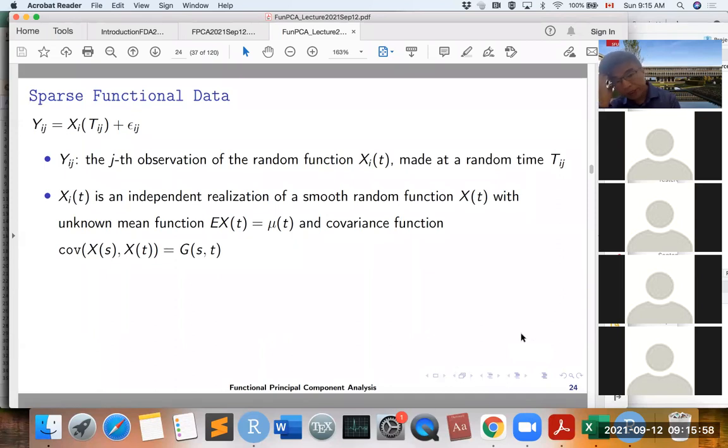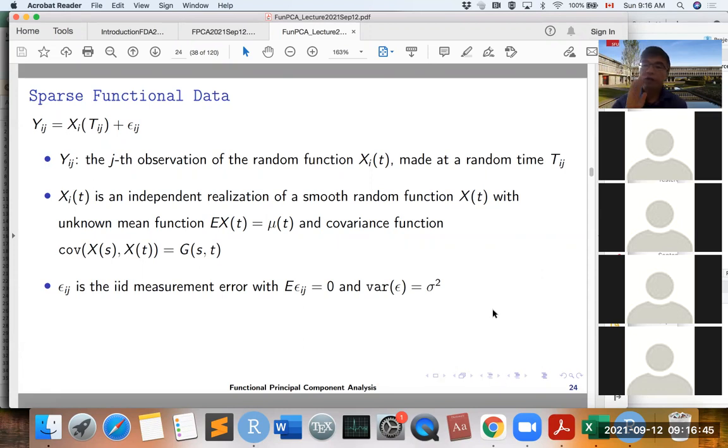Basically, we assume that the curve X_IT is an independent realization of our smooth random function XT, with the unknown mean function E(XT) equal to μ(T), and the covariance function G(S,T). Epsilon_IJ is the non-IID measurement error, with mean zero and variance sigma squared.